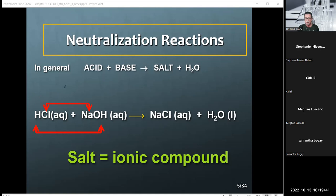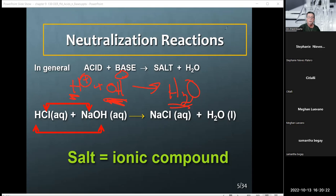The first reaction we're going to talk about is called a neutralization reaction. HCl produces a proton because it's acidic, and sodium hydroxide produces a hydroxide ion as per the Arrhenius definition. When a proton and a hydroxide ion combine, they neutralize each other and form water — hence, a neutralization reaction. So next time you have an acid stomach, you take Tums or Maalox — you are ingesting a base, which neutralizes the excess acid in your stomach.